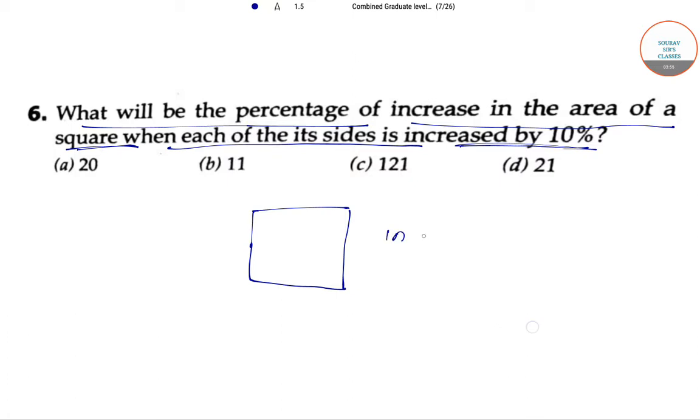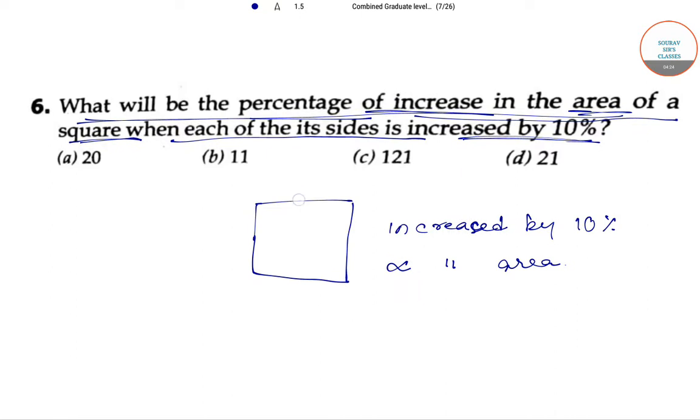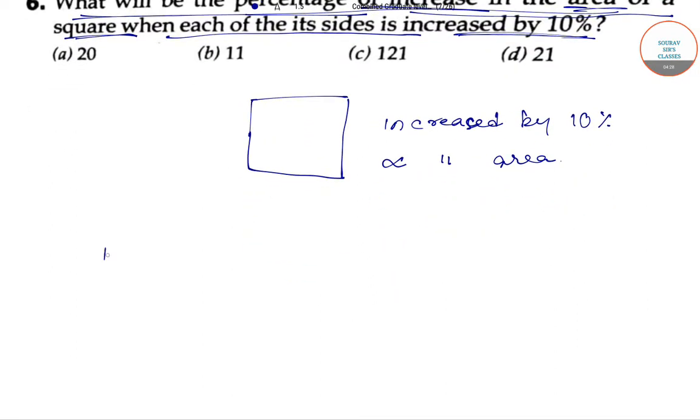when the length, all the sides are increased by 10%, then the area is also increased, directly proportional to the increased sides. We have to find the percentage of increased area. 10% increase means 100 plus 10 divided by 100, right? That will be 110 divided by 100.